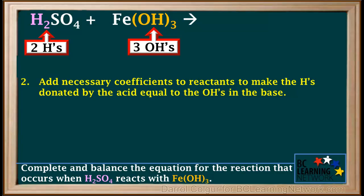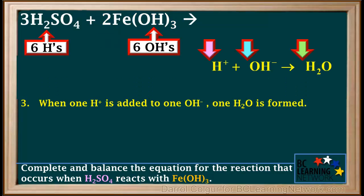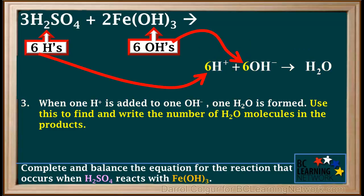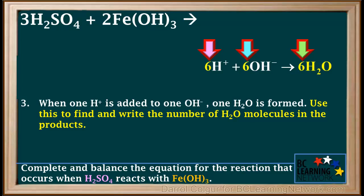Our next step is to add necessary coefficients to reactants to make the H's donated by the acid equal to the OH's in the base. The lowest common multiple of 2 and 3 is 6. Adding the coefficient 3 in front of H₂SO₄ gives us a total of 6 H's, and adding the coefficient 2 in front of Fe(OH)₃ gives us a total of 6 OH's. When 6 H⁺'s are added to 6 OH⁻'s, 6 molecules of water are formed, and we'll add 6 molecules of water to the product side of our equation.